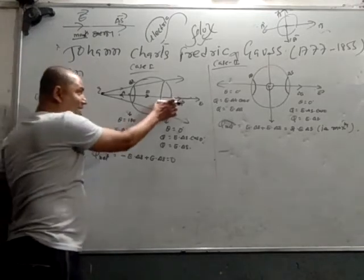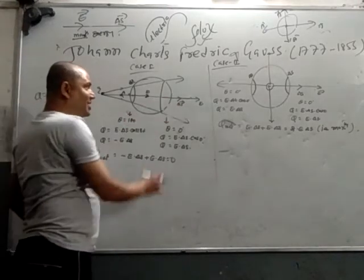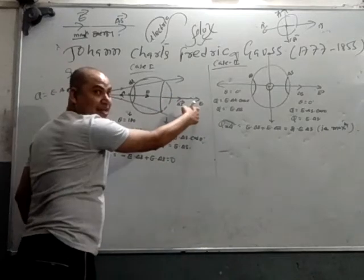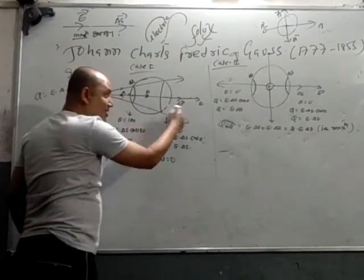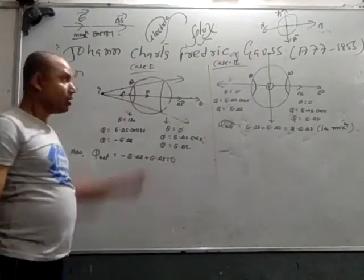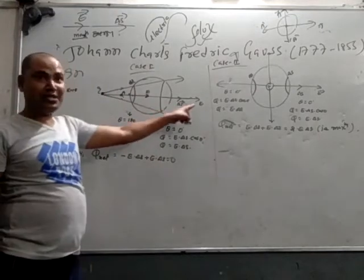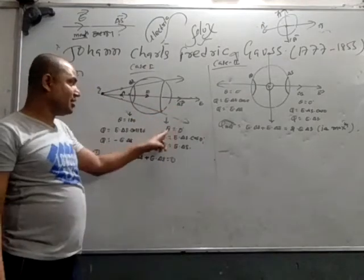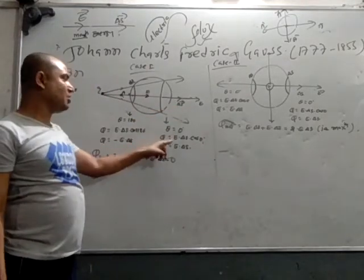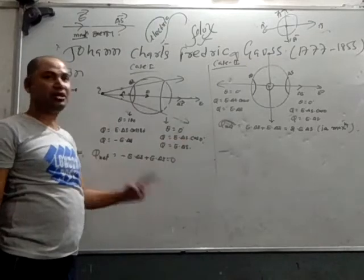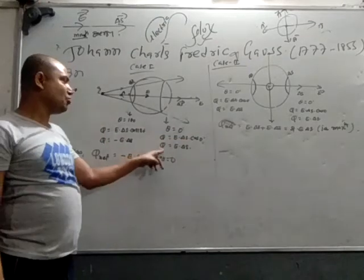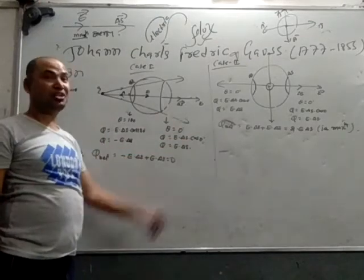Now on the right-hand side, the direction of the field is to the right, and the direction of the surface area is also to the right. Both are in the same direction, so theta will be 0 degrees. So flux will be E·S·cos 0°. Cos 0° equals 1, so net flux equals E·S on the right side.